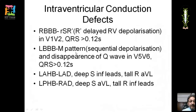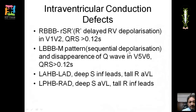In left bundle branch block (LBBB), we see an M pattern in V5 and V6 with disappearance of the normal Q wave. The Q wave disappears because LBBB alters septal depolarization. The M pattern results from sequential ventricular depolarization — right ventricle fires first, then the left — producing two peaks. QRS duration is greater than 0.12 seconds for complete LBBB, and 0.11 to 0.12 for incomplete.